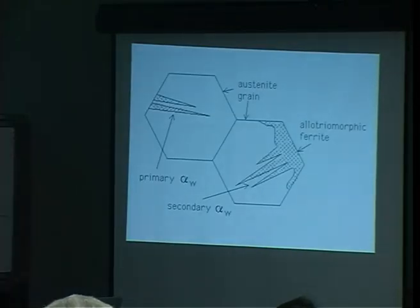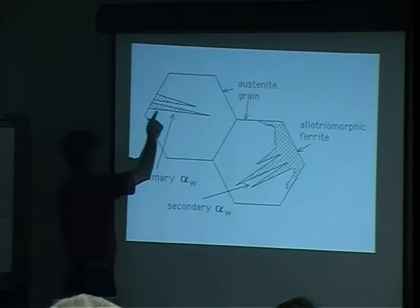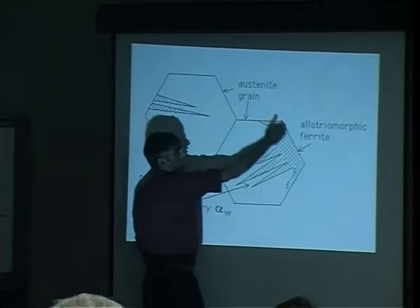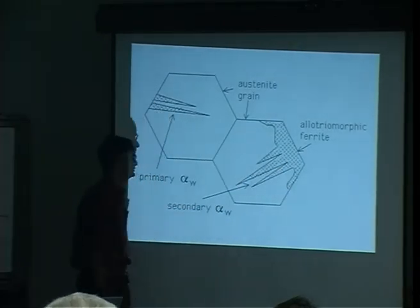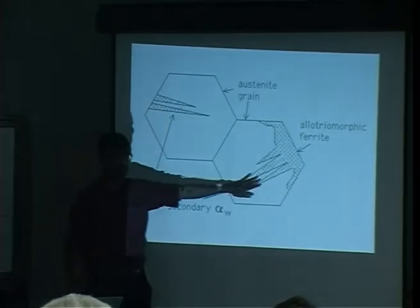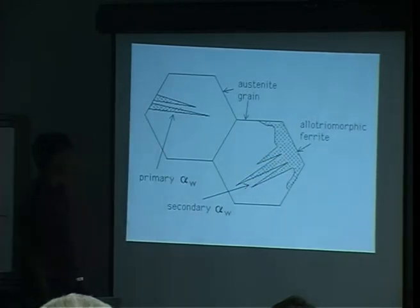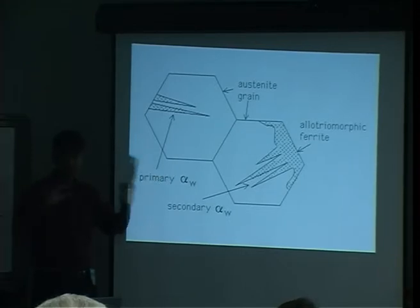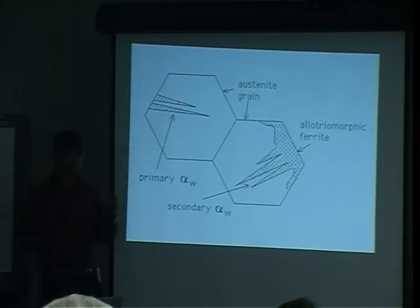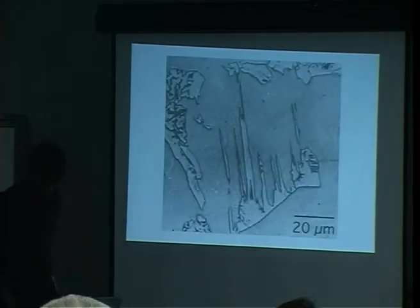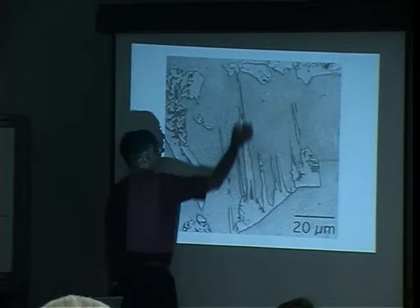The microstructure of Widmanstätten ferrite shows austenite grains with large, quite coarse plates starting from the austenite grain boundaries or from existing ferrite. These are called primary and secondary plates. Importantly, these plates are no longer thin lenses like martensite and bainite — they form as wedges, tapering in only one direction.